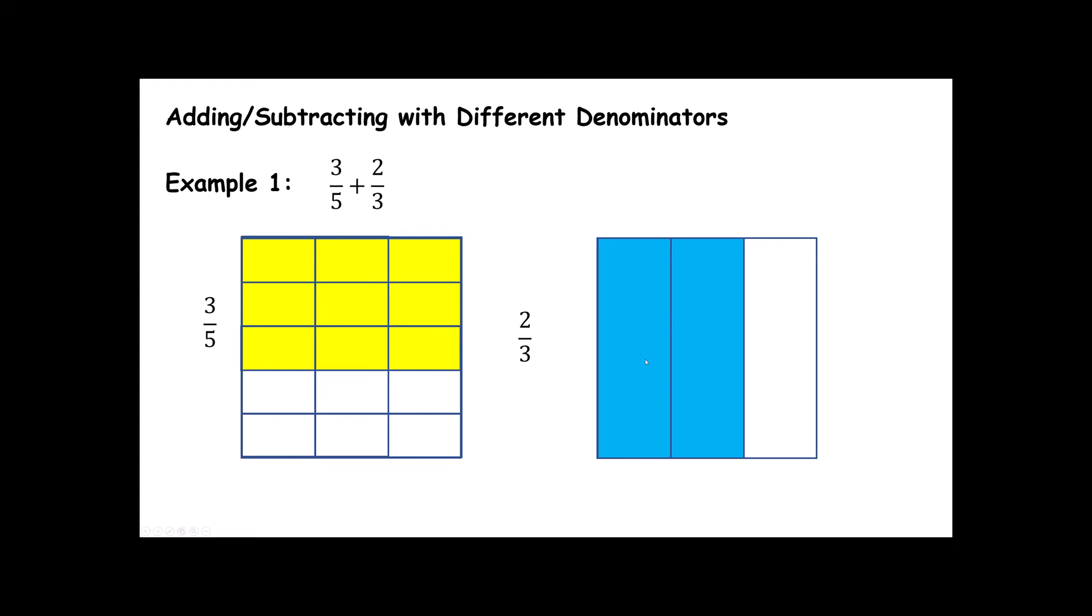I'm then going to take these 4 horizontal lines that created my 1, 2, 3, 4, 5 rows, and I'm going to transfer those over here to the right. Now, 1, 2, 3, 4 horizontal rows. Notice that I have 1 row, 2 rows, 3 rows, 4 rows, and 5 rows. These 5 rows are the same size as these 5 rows.